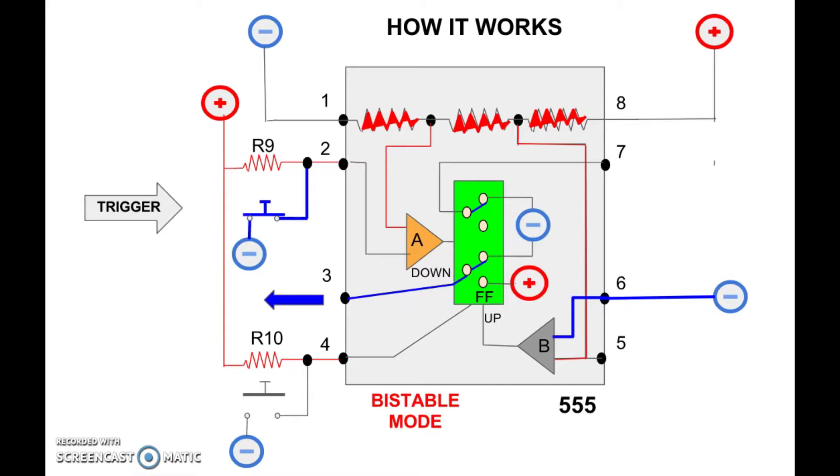until you trigger the timer by dropping the voltage to pin 2. As soon as the voltage pulse is generated, it runs the chip internally, which sends a pulse to the flip-flop, forcing it to the down position, and flips the timer back to generating its positive output.